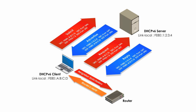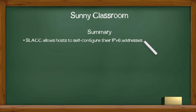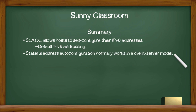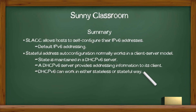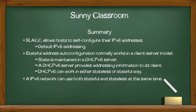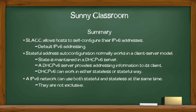DHCPv6 uses UDP port number 546 for the client and port number 547 for the server. In summary, SLAAC allows hosts to self-configure their IPv6 addresses and is the default IPv6 addressing method. Stateful address auto-configuration normally works in a client-server model, where a DHCPv6 server provides addressing information to the clients. Keep in mind, DHCPv6 can work in either stateless or stateful way, and a network can use both stateful and stateless auto-configuration at the same time — they are not mutually exclusive.